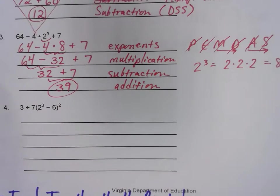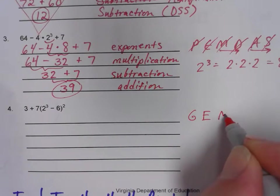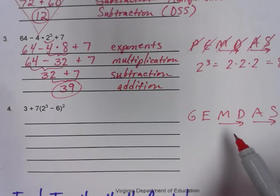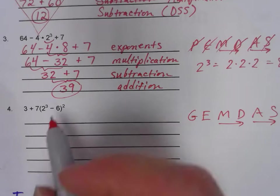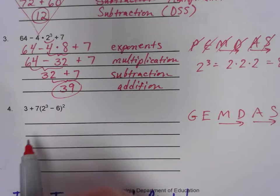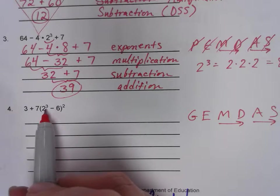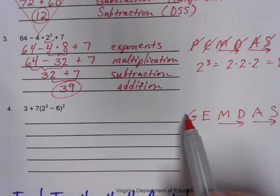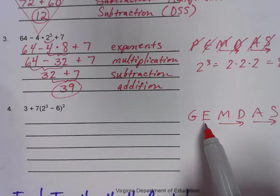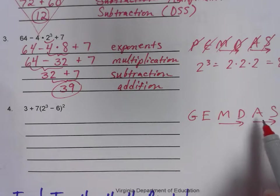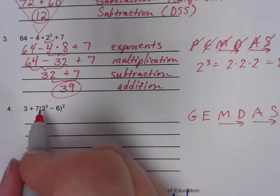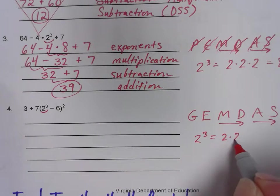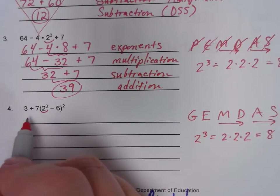Last one — number four. Let's jot down GEMDAS real quickly and remember your partners or buddies. Are there any grouping symbols? Oh yes, I see parentheses. We need to do what's inside first, but this gets a little tricky because there are a couple of things to do in here — there are exponents: two to the third power, and a take away six. Even within the grouping symbols I have to think about the whole stretch of the rules. I would take care of exponents first within the grouping symbols. Two to the third power means two times two times two — expanded form — which gives us eight.